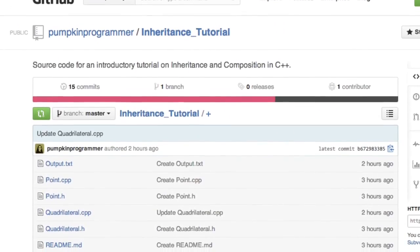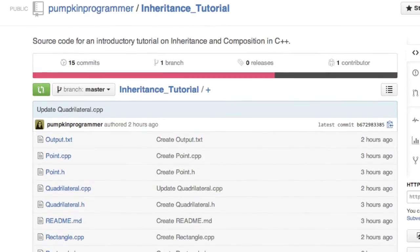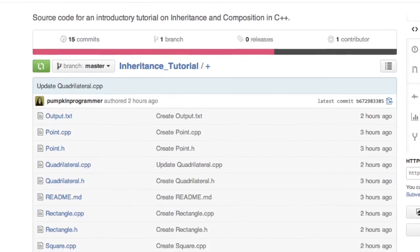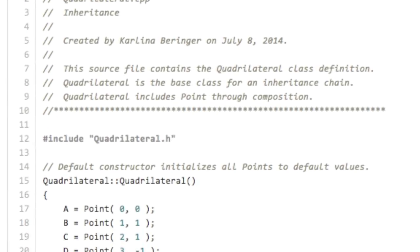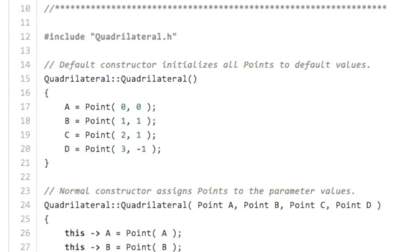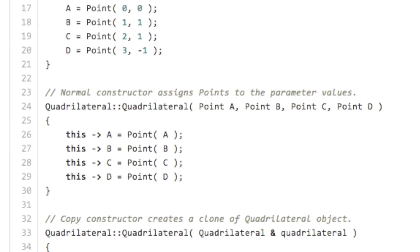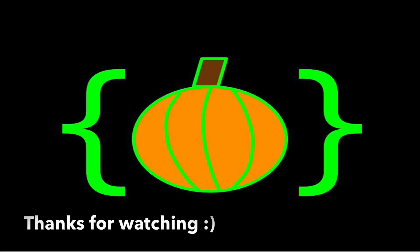To learn more about object-oriented programming in C++, please see the next video in this series, Polymorphism. To get the complete coding example for the tutorial you just watched, please visit the link in the video description. Thanks for watching.